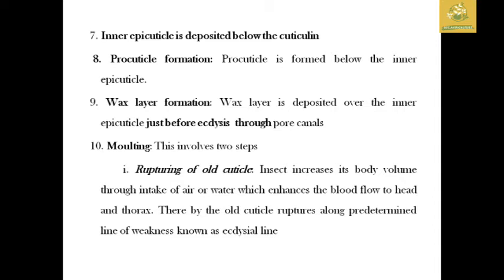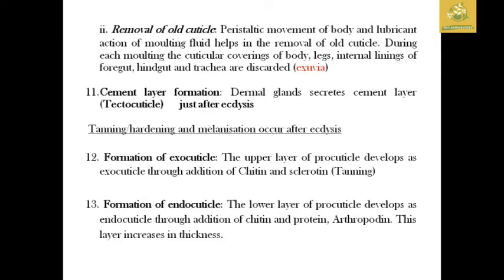The first step of ecdysis is rupturing of the old cuticle. When the old cuticle breaks, air is formed. The insect takes in air or water, blood flows from the head to the thorax. There is a line of weakness called the ecdysis line, facilitating removal of the old cuticle through peristaltic movement of the body.